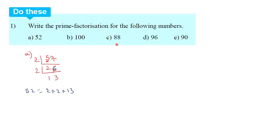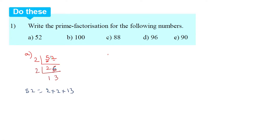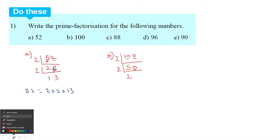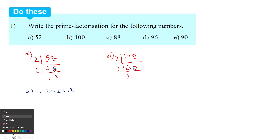Next, we have to look at another question: 100. Here we have 0 at the end, so 2 divides it. 2 into 50 is 100. Next, 2 divides 50: 2 into 25 is 50. Then 5 divides 25: 5 into 5 is 25. So with 5, we get 5 times, meaning 5 into 5 is 25.